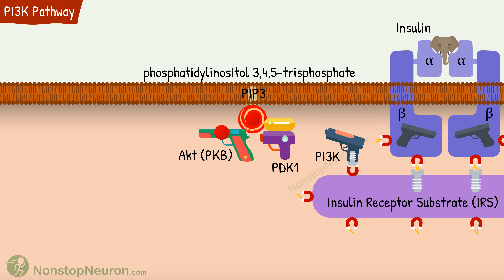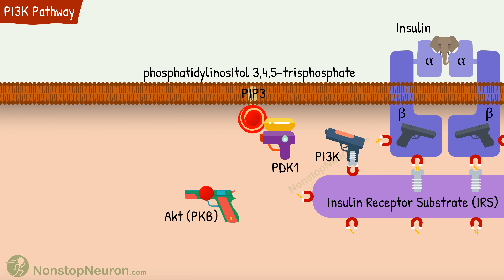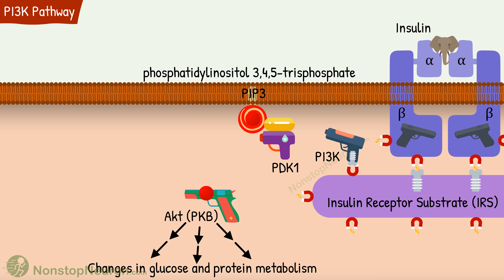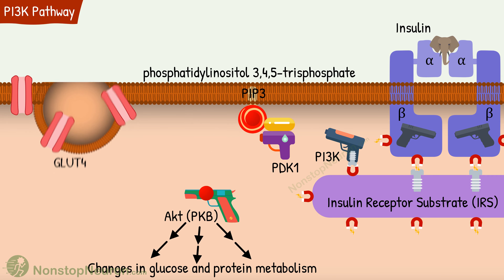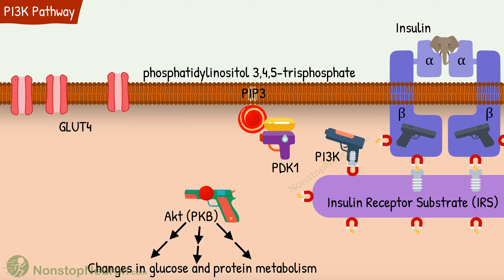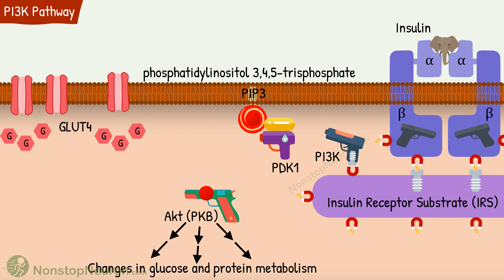PDK phosphorylates a protein called AKT or PKB. The phosphorylation activates this protein. Now this protein, as per the name, is also a kinase, and there are multiple pathways downstream to this. Eventually they produce major changes in glucose and protein metabolism in different tissues. For example, in muscle cells and adipocytes, it causes the insertion of GLUT4-containing vesicles into the cell membrane, which leads to increased entry of glucose into the cell. So this was the PI3K pathway.